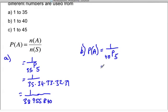The permutation of 40 choose 5, which is 40 times 39 times 38 times 37 times 36. And that works out to be 1 over 78,960,960.